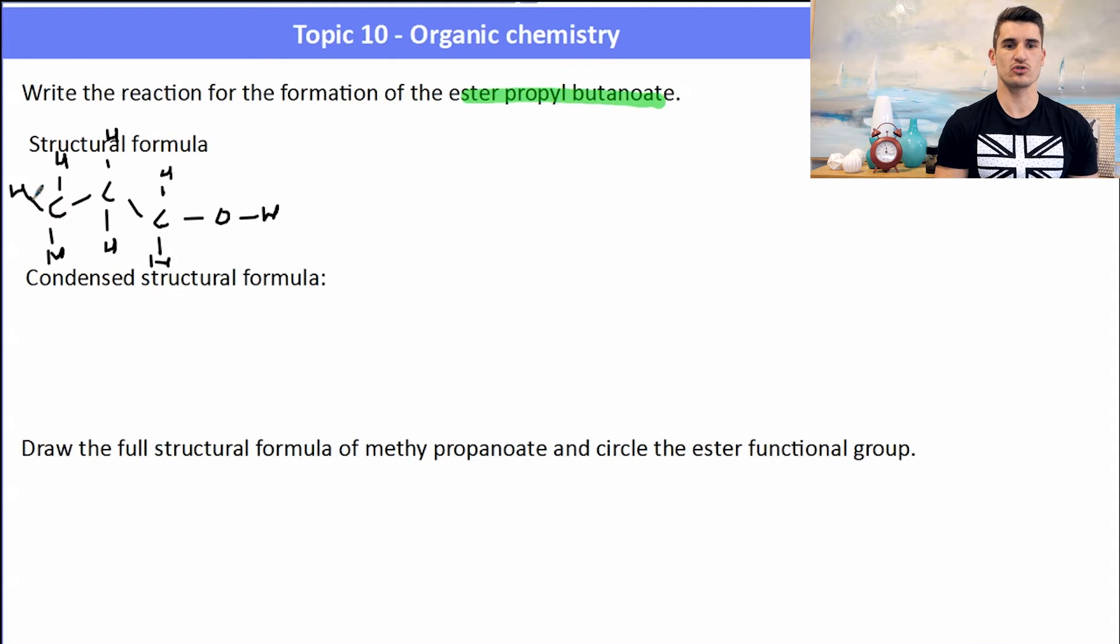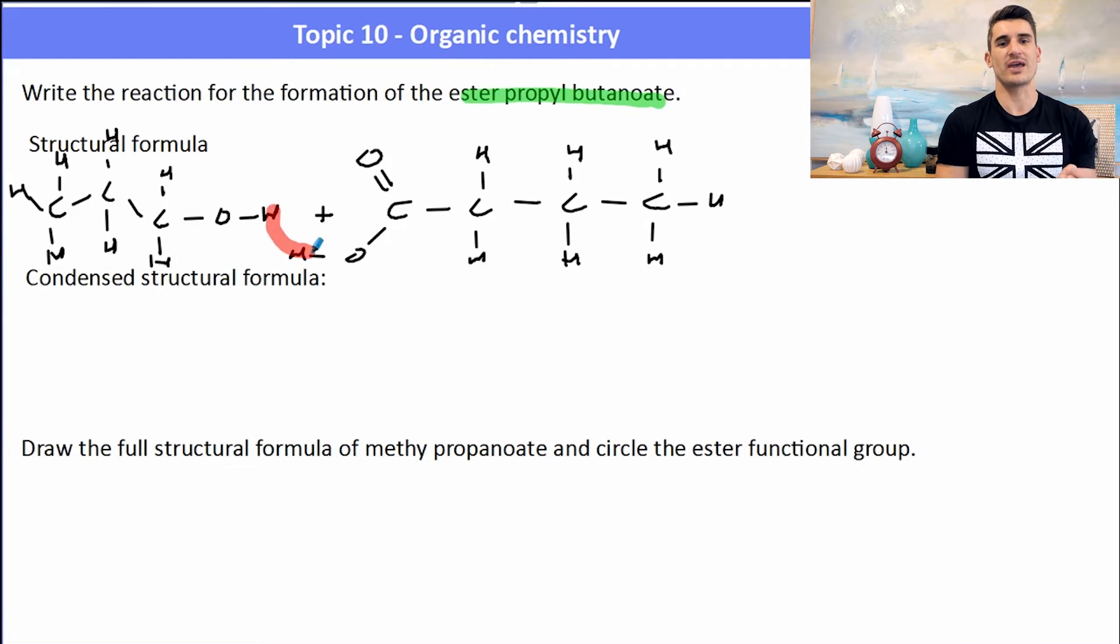Remember the reaction will take place between the OH of the carboxylic acid and the H of the alcohol, which will remove that section as water because it's a condensation reaction. Our catalyst would be concentrated H2SO4, which would give us our ester with our three carbons, a single bond to our oxygen, and then that oxygen is connected to the C double bond O of the carboxylic acid to form our ester.